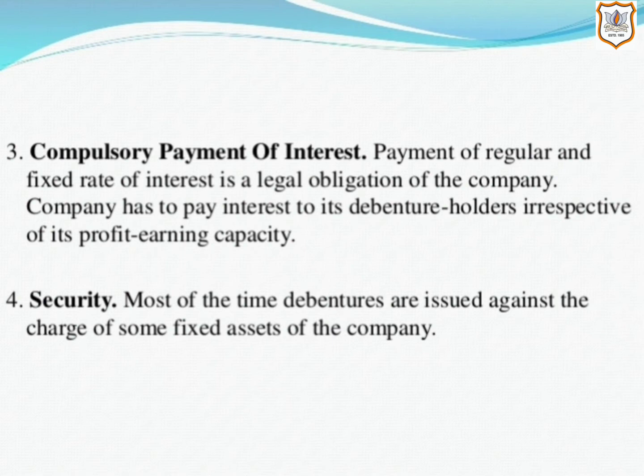The next feature is compulsory payment of interest. Payment of regular and fixed rate of interest is a legal obligation of the company. The company has to pay interest to its debenture holders irrespective of its profit-earning capacity. Regarding security, most of the time debentures are issued against the charge of some fixed assets of the company. Debentures can be issued with or without charge on the assets — charge on the assets means mortgage or hypothecation.